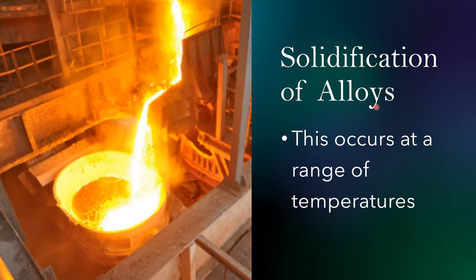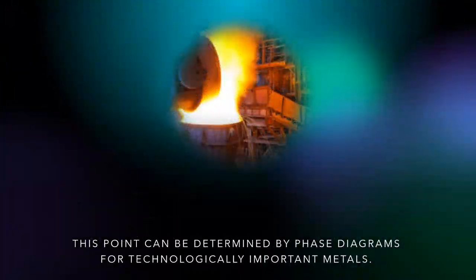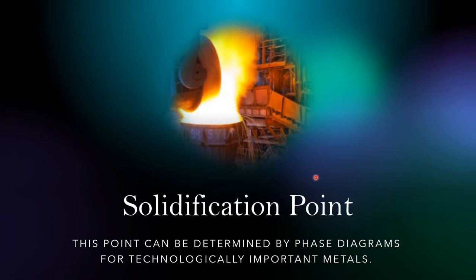The next thing you need to know is the solidification point. This can be determined from the phase diagram, and it depends on the type of metal. For technologically important metals, the solidification point is critical in making the product. You can obtain this point by developing a phase diagram, which represents the change of phase from solid to liquid and back.